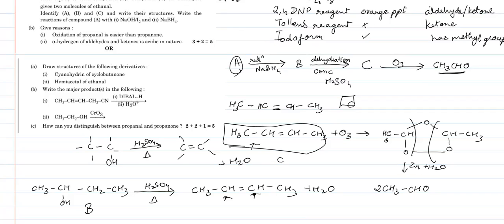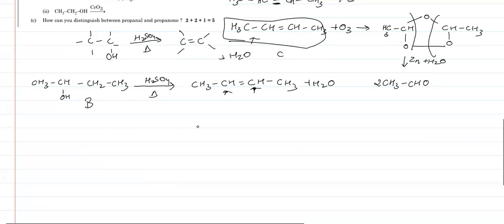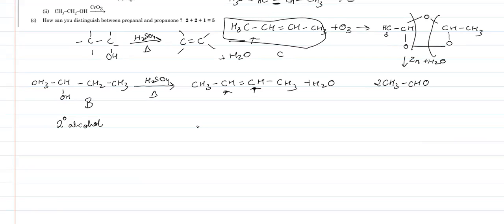Now for the reduction step: something undergoes reduction with NaBH4 to give compound B, which is a secondary alcohol. Aldehydes would give primary alcohols — we don't want that. Since B is a secondary alcohol, compound A must be a ketone. The general reaction is: R-CO-R' + NaBH4 → R-CH(OH)-R'. So compound A is CH3-CO-CH2-CH3 (butanone/methyl ethyl ketone), which on reaction with NaBH4 gives compound B, the secondary alcohol butan-2-ol.